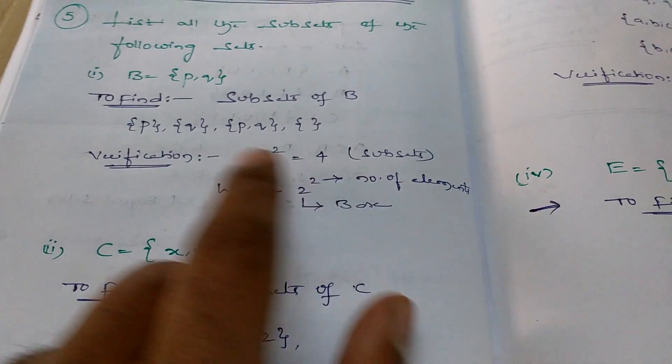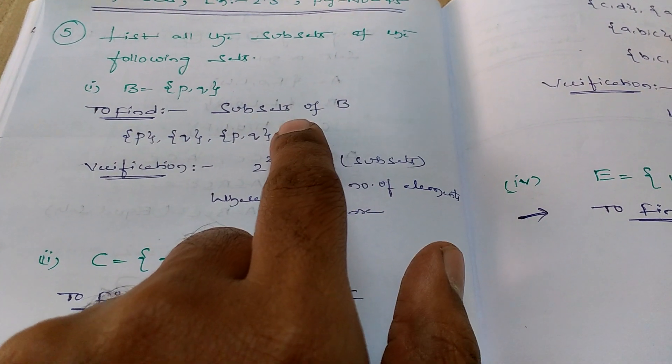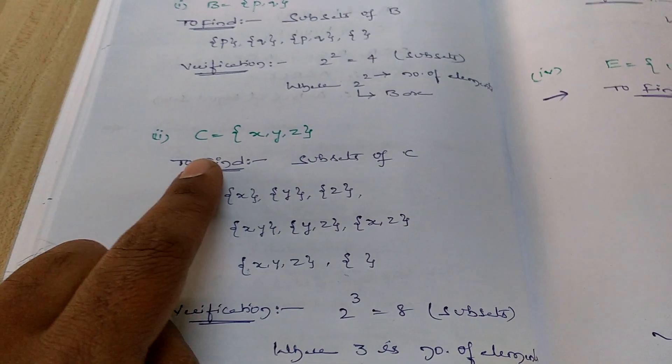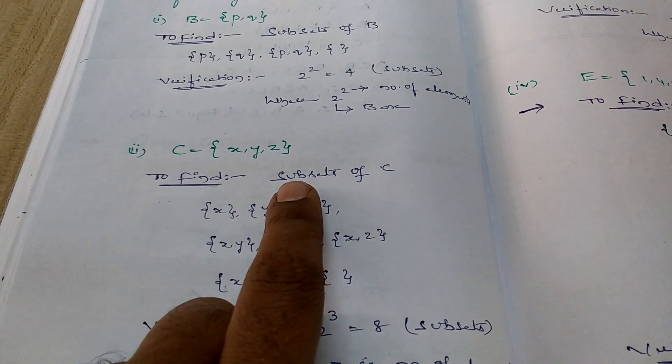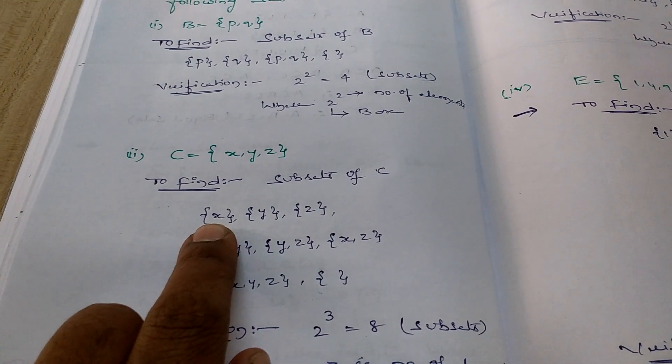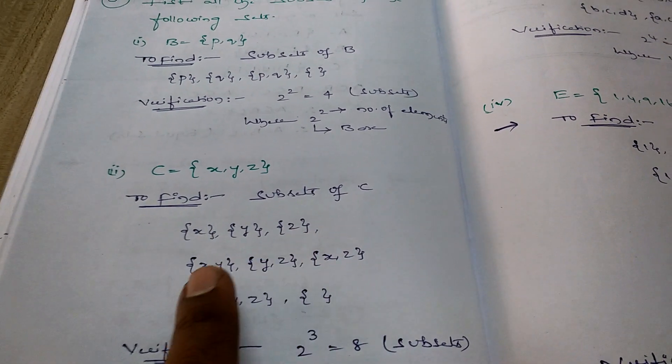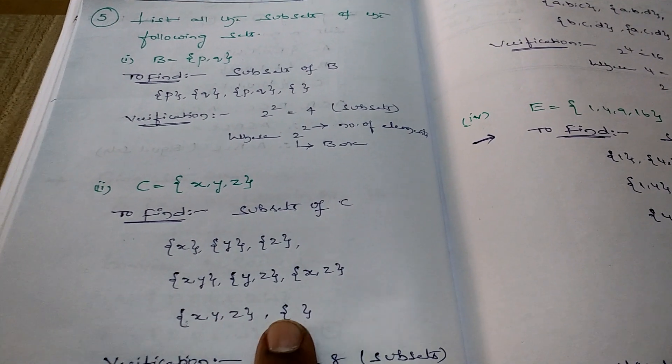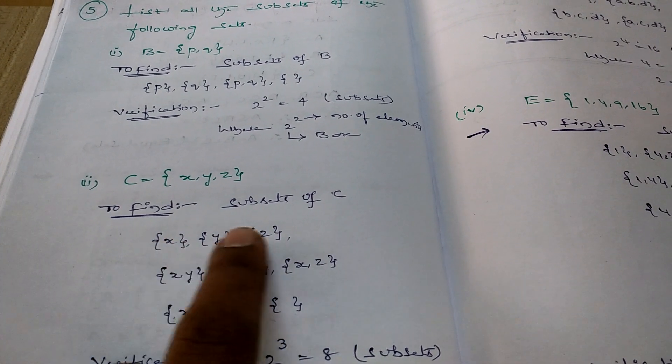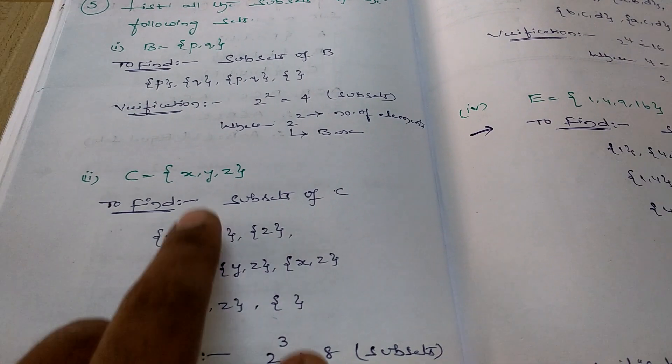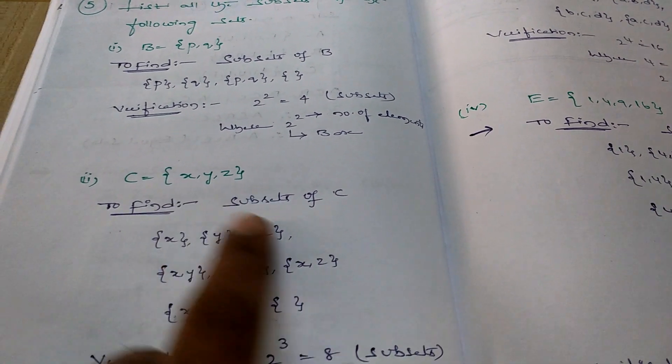Coming to the second sum. What is given? Set C equals {x, y, z}. We have to find the subsets of C. So take down the number of parts here: {x}, {y}, {z}, {x,y}, {y,z}, {x,z}, {x,y,z}, and the null set. Count how many we got - 1, 2, 3, 4, 5, 6, 7, 8. Total 8 subsets when the elements are 3 for the given set.